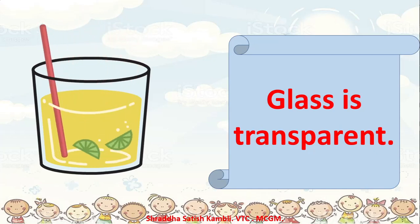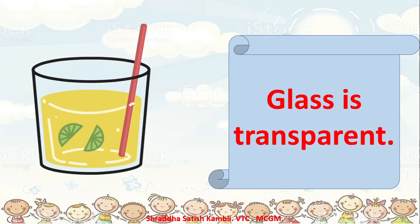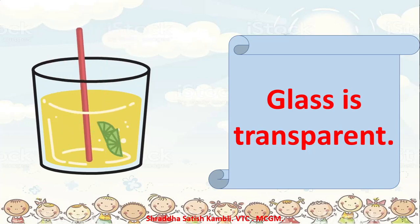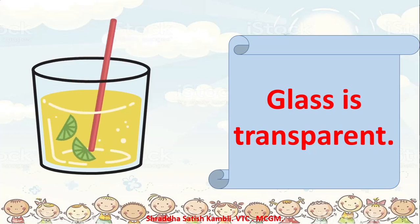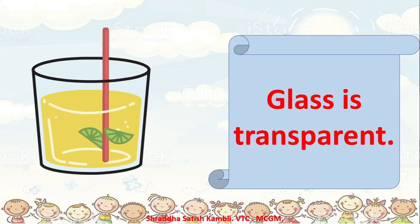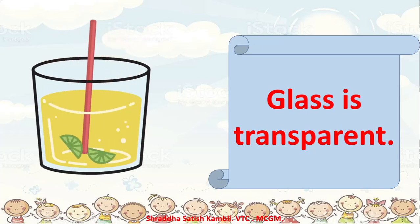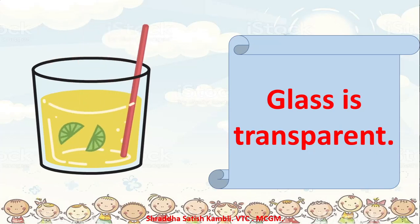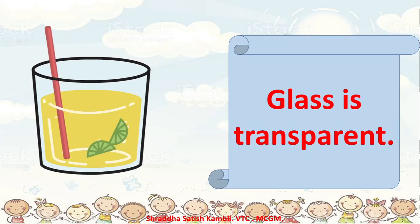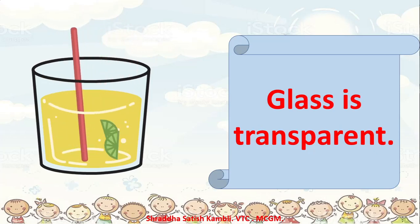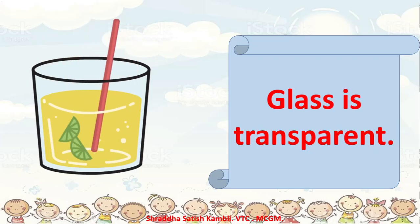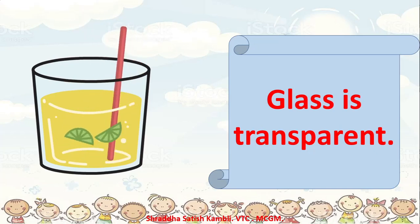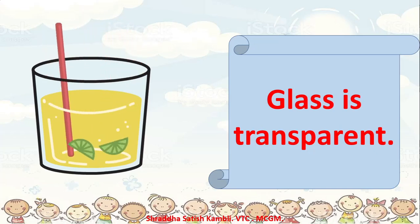Now imagine if it was made up of steel. Will you be able to see it like this? You will have to look from the top to see that the lemon is moving inside it. If you look at it from the front like we are doing now, you will not be able to see anything which is happening inside.